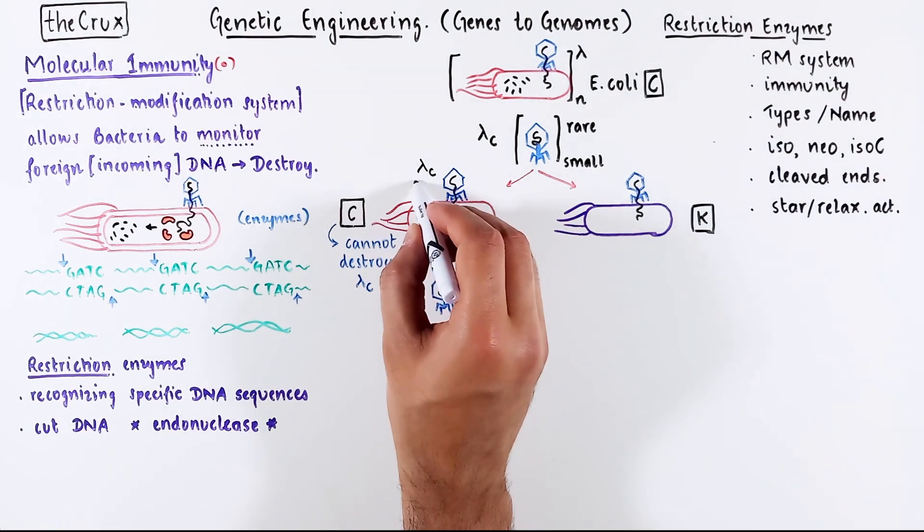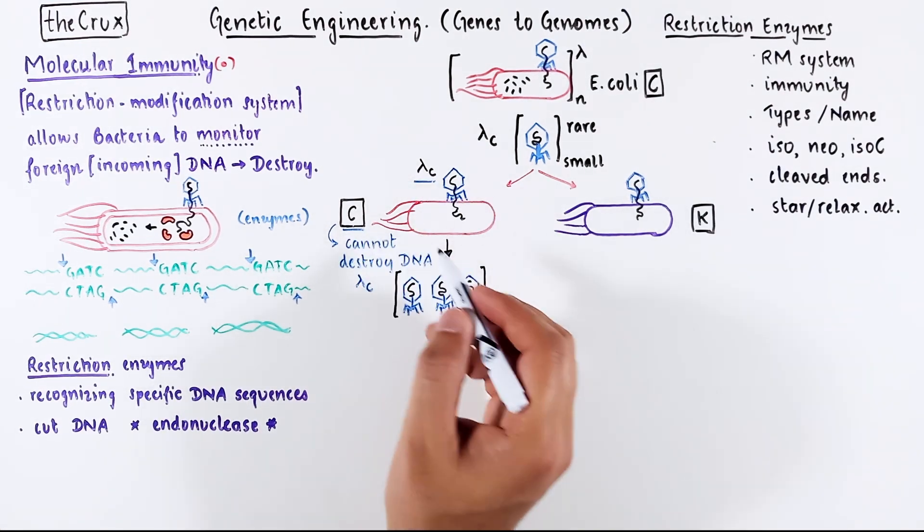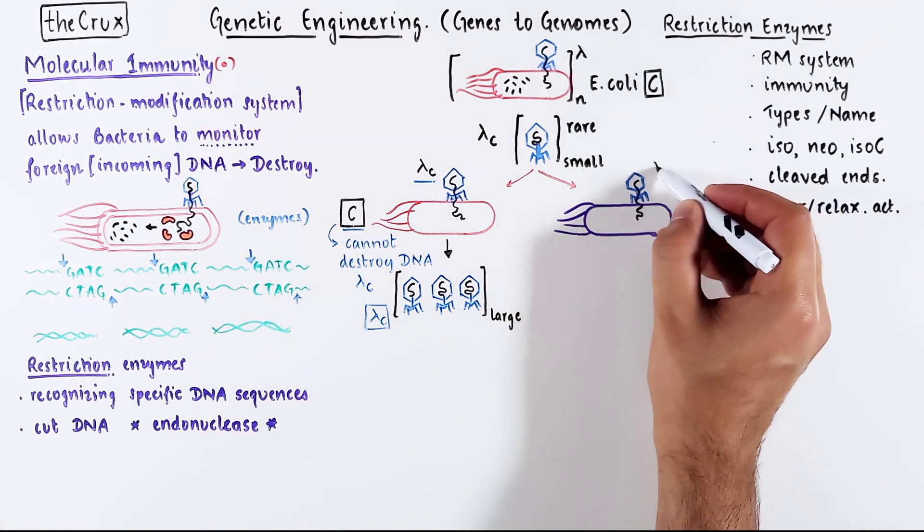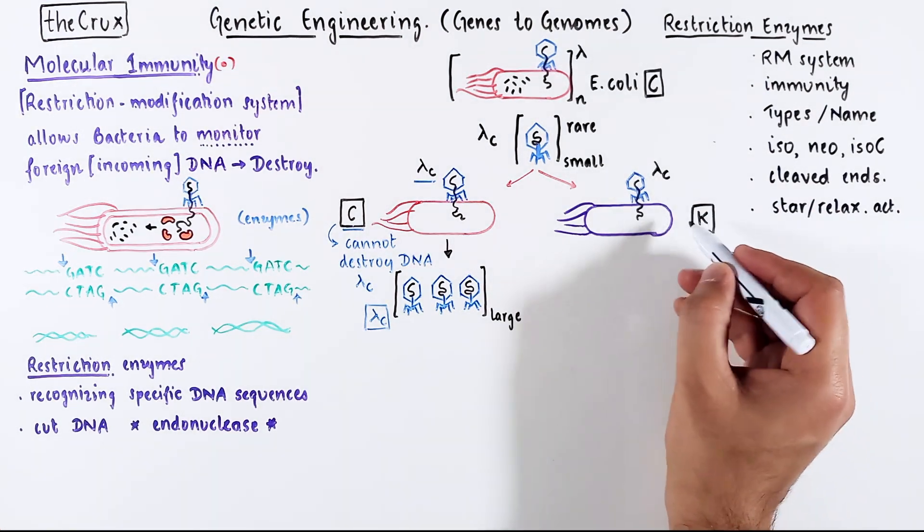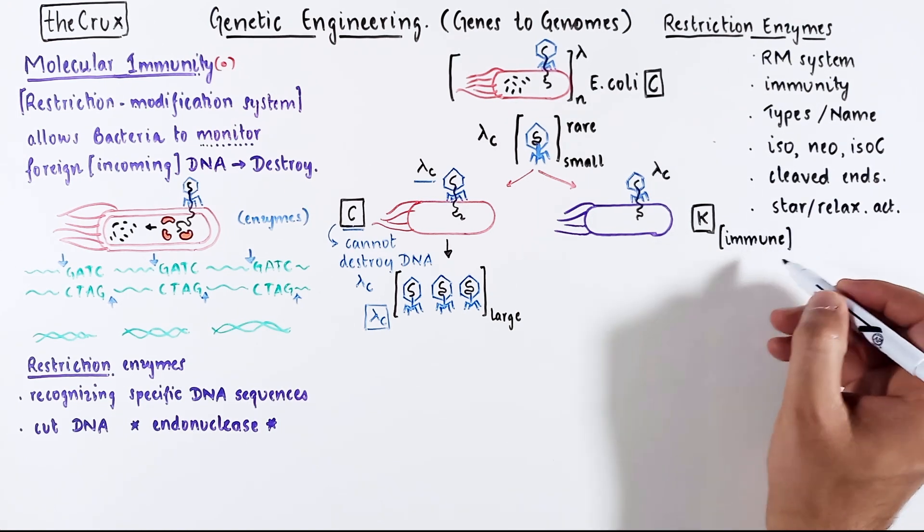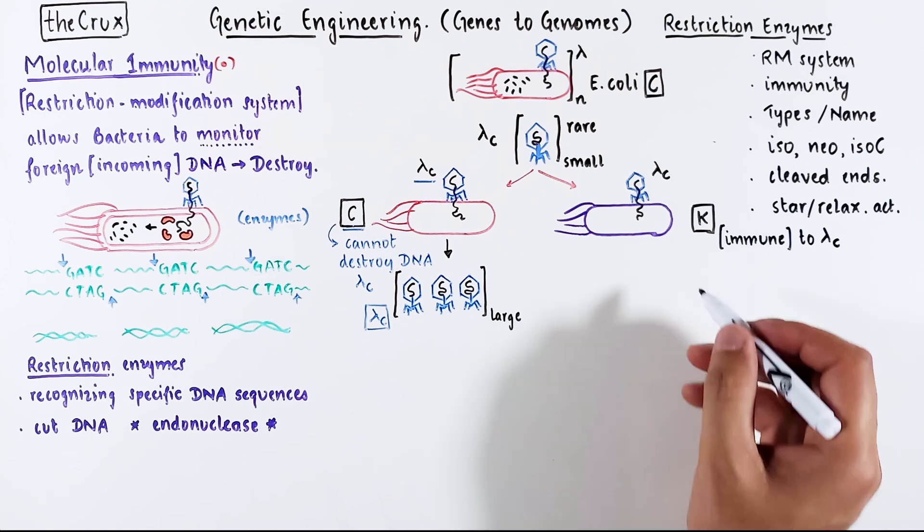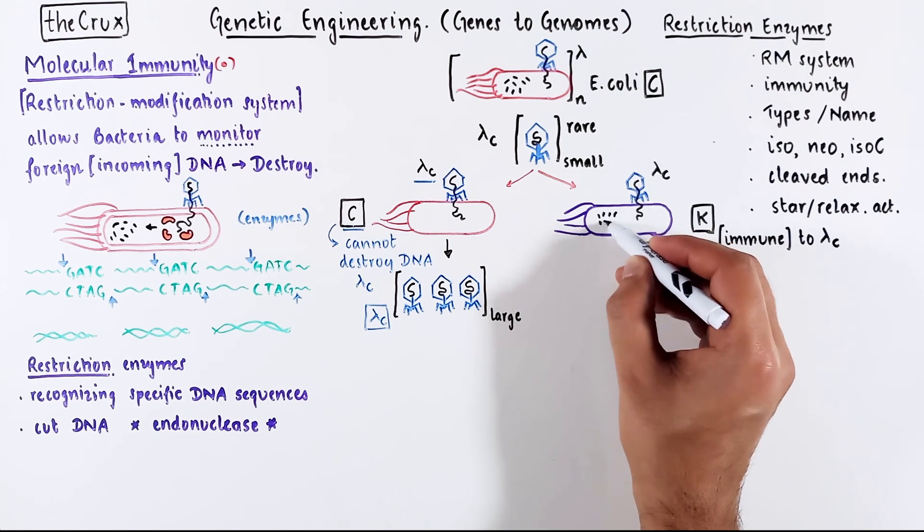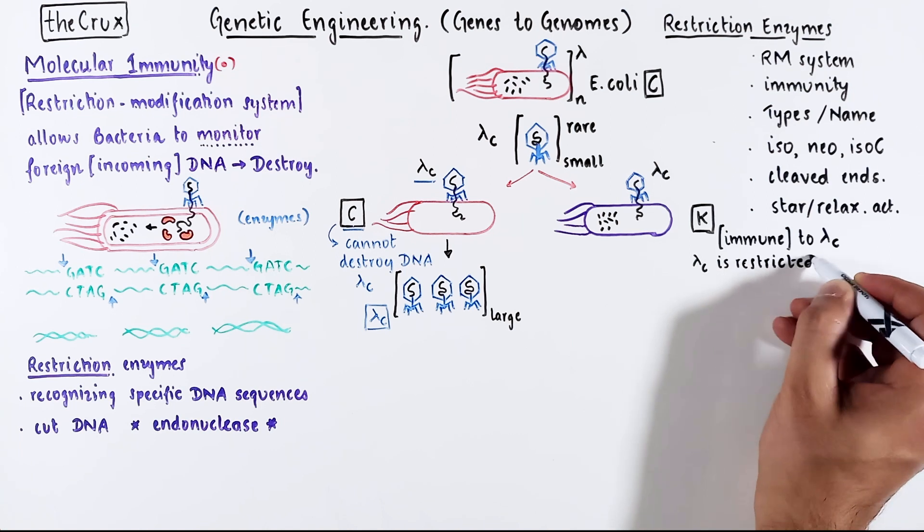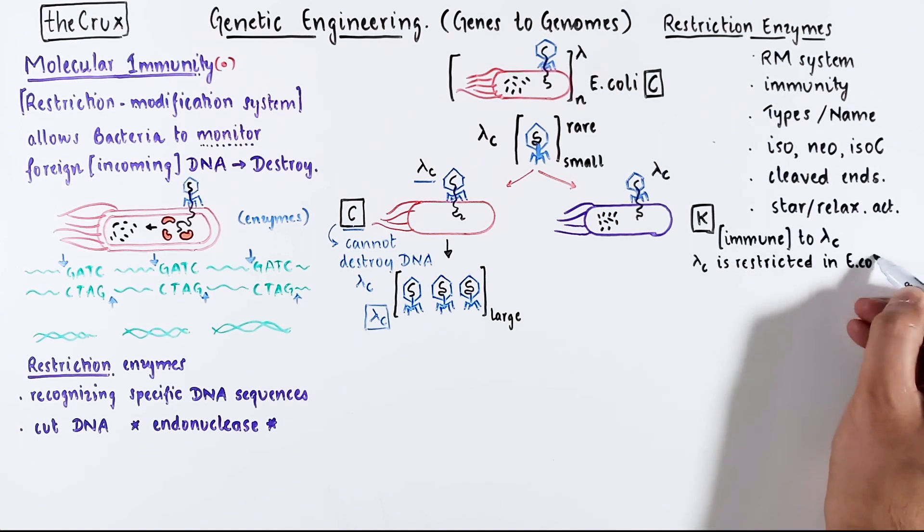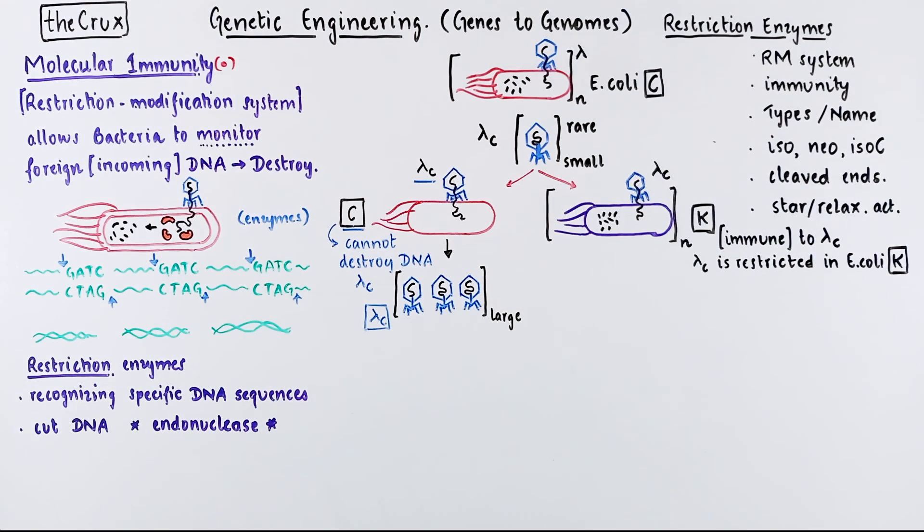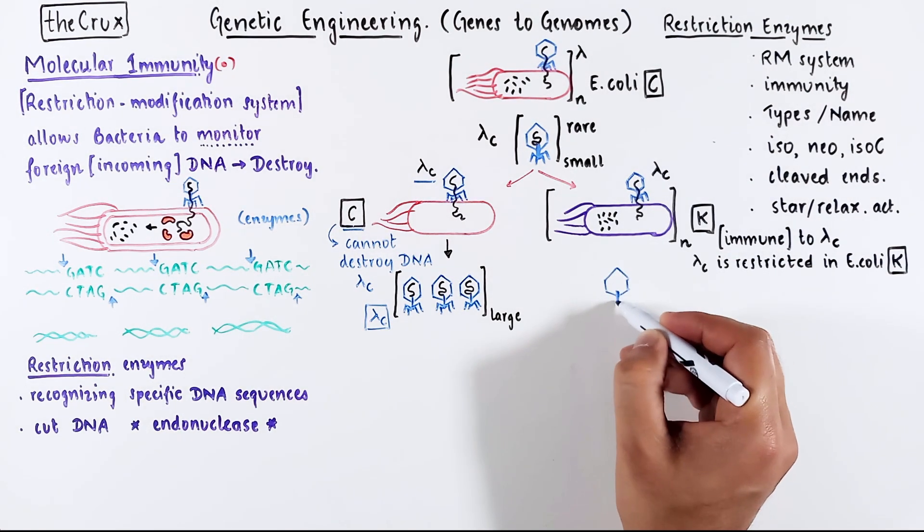The lambda C infected E. coli C, and obviously the progenies are also now named lambda C. But something different happens when this lambda C infects bacteria K. It turns out K bacteria is immune to lambda C, and it can easily destroy its DNA. Another way to say this is that lambda C is restricted in E. coli K. But if you do this infection in very very large amounts, there's a chance that very small amount of virus is made in E. coli K.